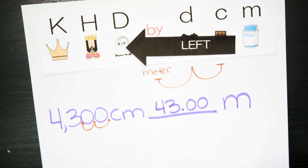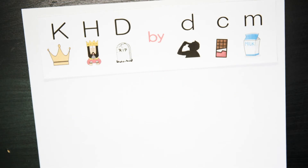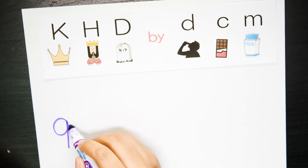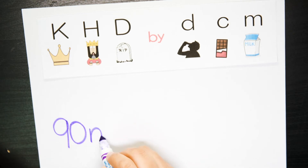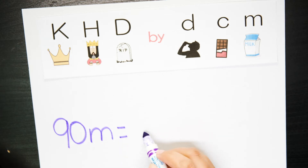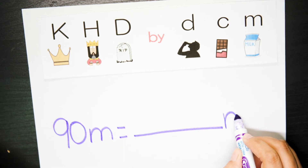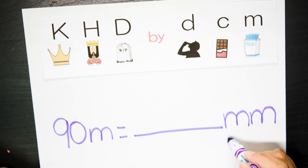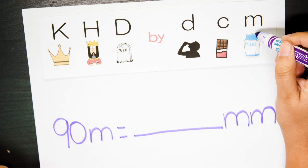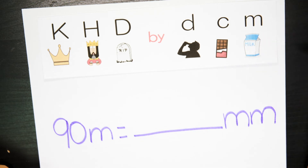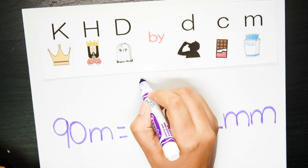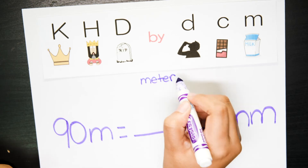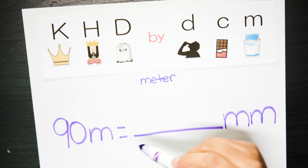So how about we do another exercise? I would like you to convert 90 meters into millimeters. Please remember that millimeter is the lower M — this one stands for millimeter. Remember that the base for length is meter. Please pause this video and try this other exercise.